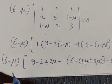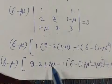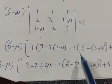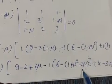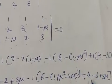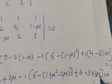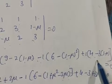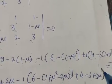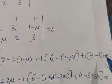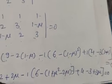Opening the brackets: (6-mu) times [(9 - 2 + 2mu) minus (6 - 1 - mu² + 2mu - 1) plus (4 - 3 + 3mu)] equals 0. After correction, the terms simplify with (1-mu) factors giving minus 3mu.